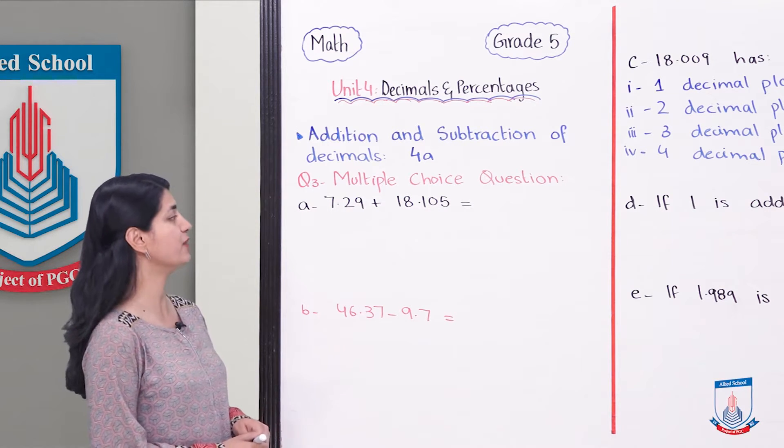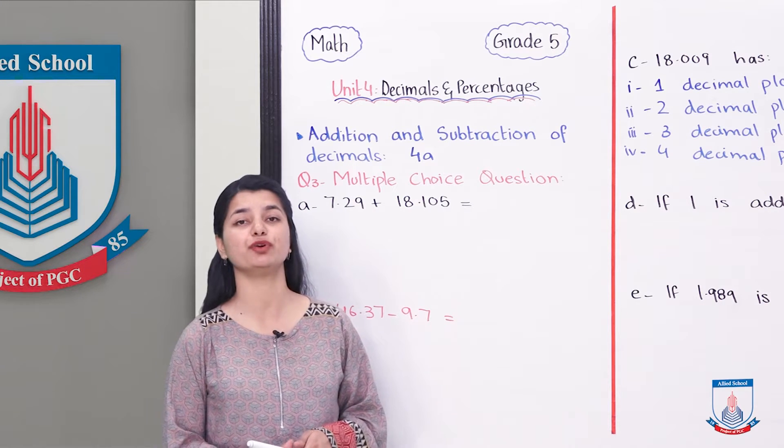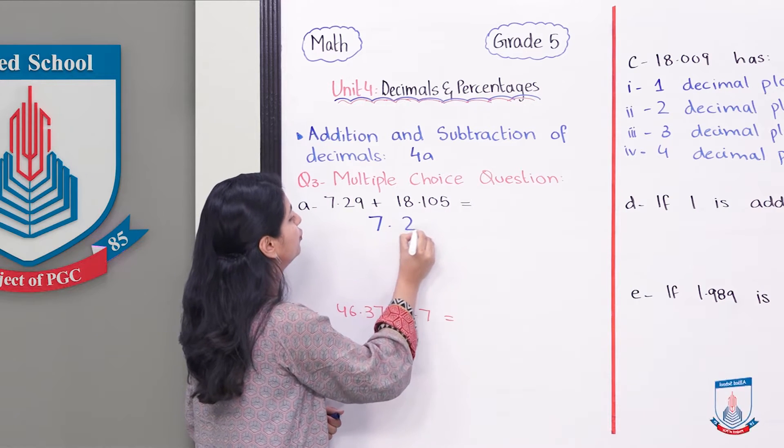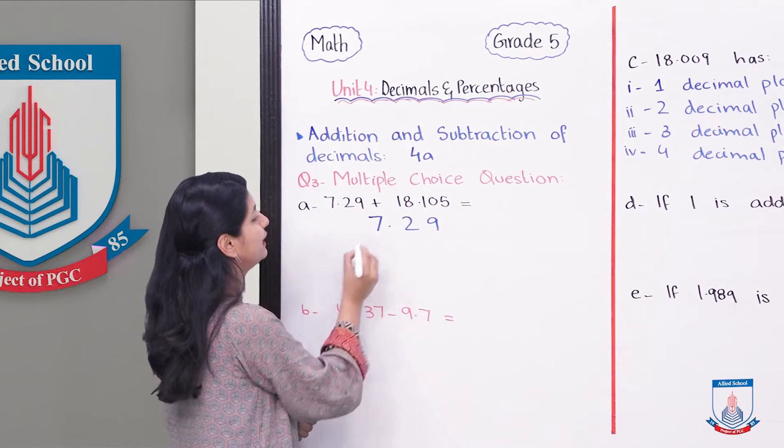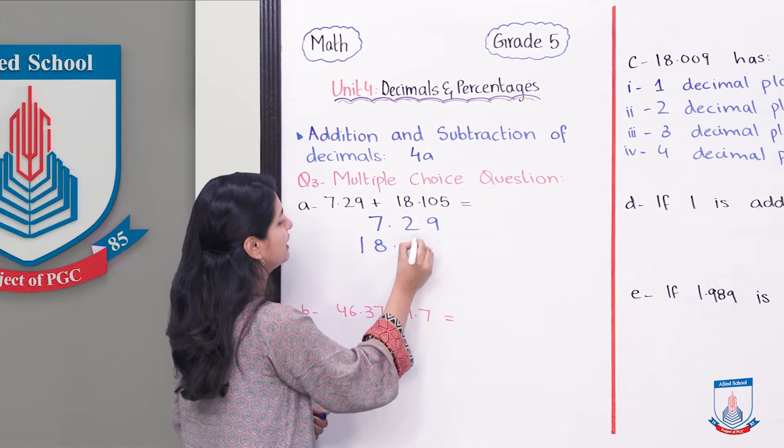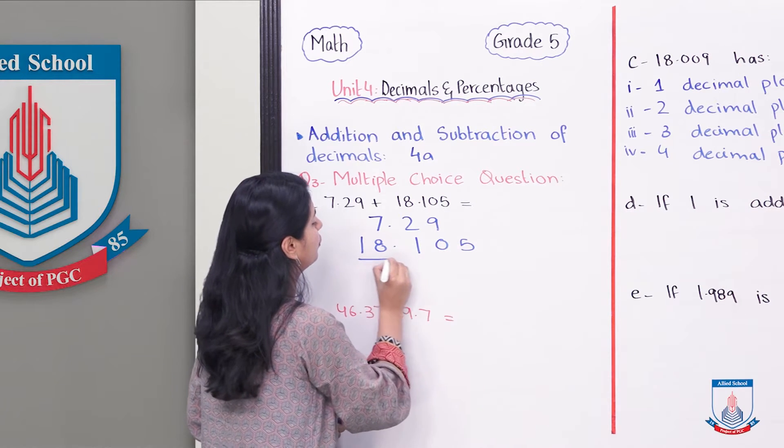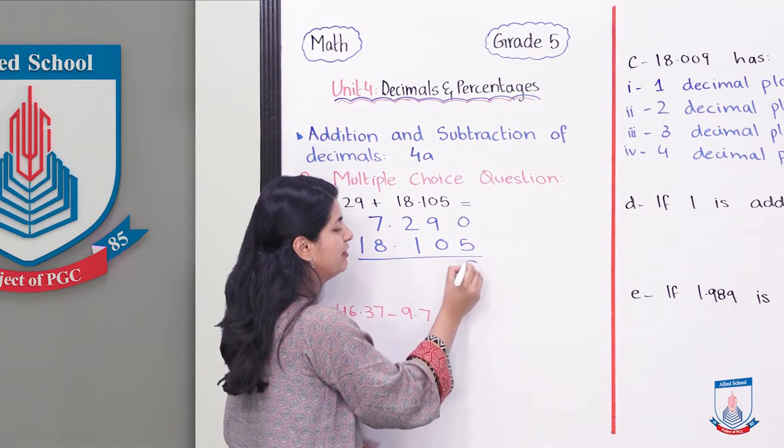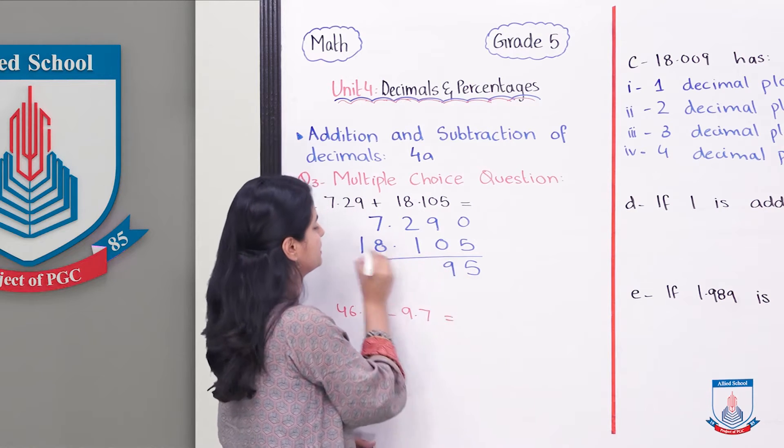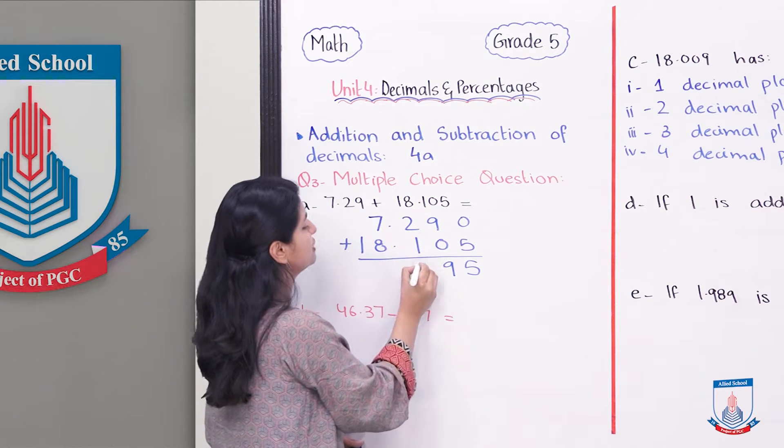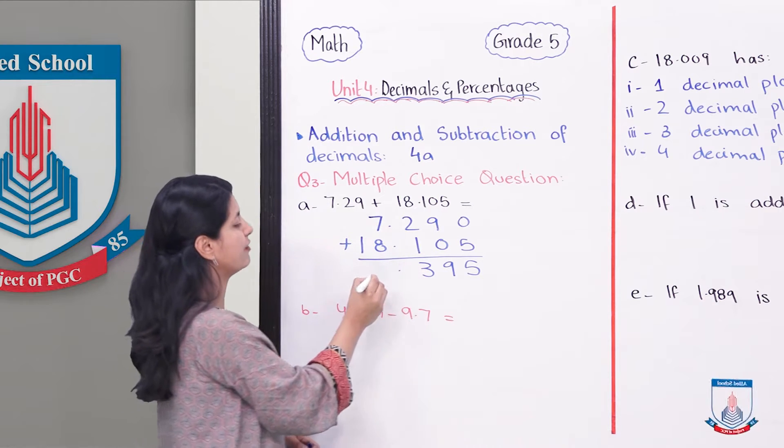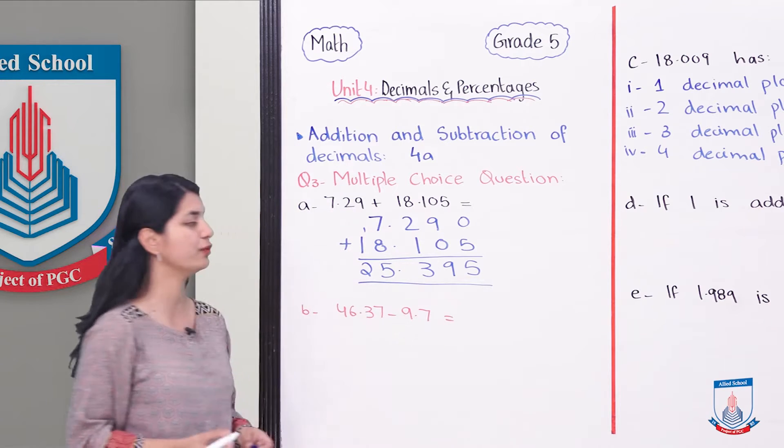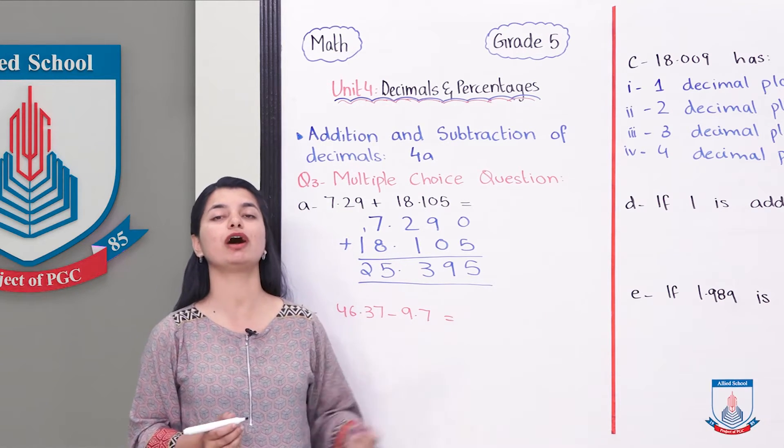So the first part is 7.29 plus 18.105. So what will it be? You will solve it out: 7.29, now 18, we will do the placement, 1, 0, 5. We have to add them. With 5 there is nothing, we can put a 0 here. So 5 plus 0 is 5, 9 plus 0 is 9, 2 plus 1 is 3, decimal, 7 plus 8 is 15, 1 carry. Your correct option will be 25.395. You will select this.